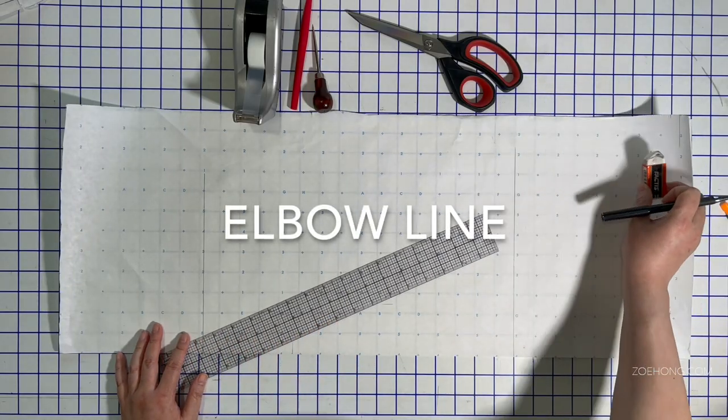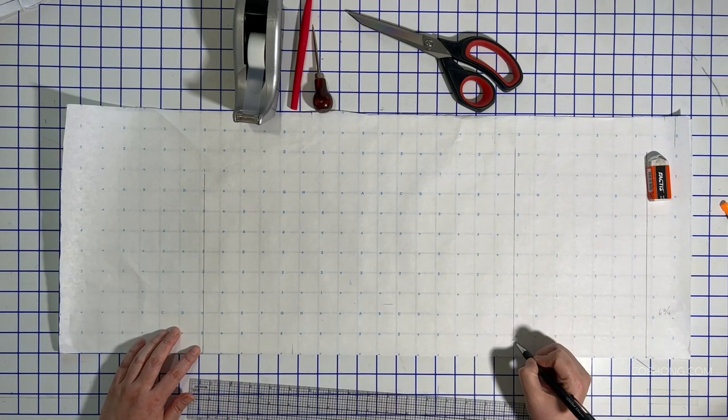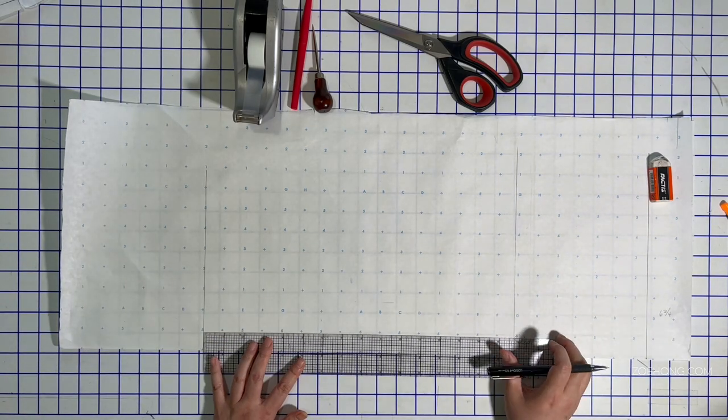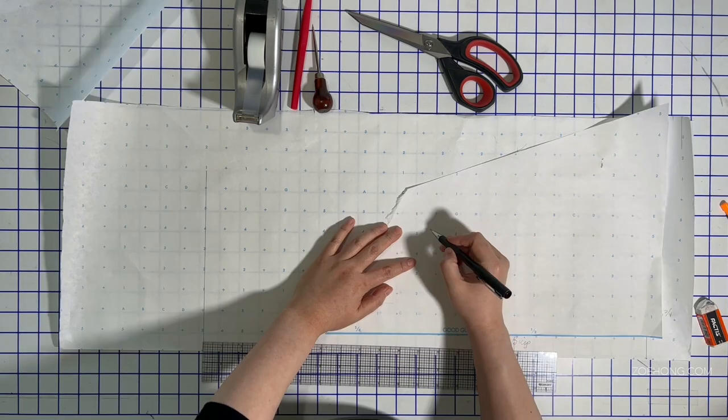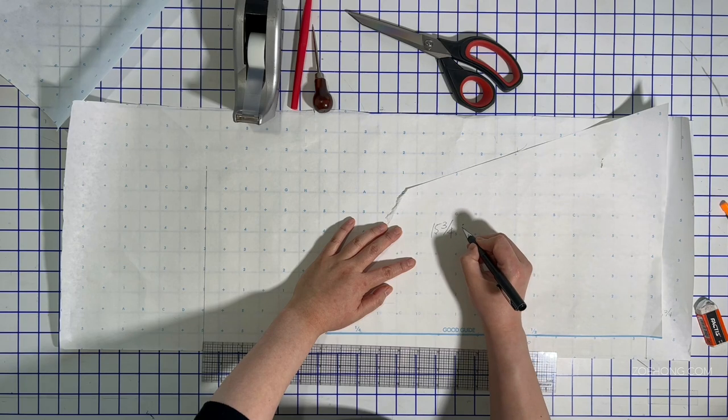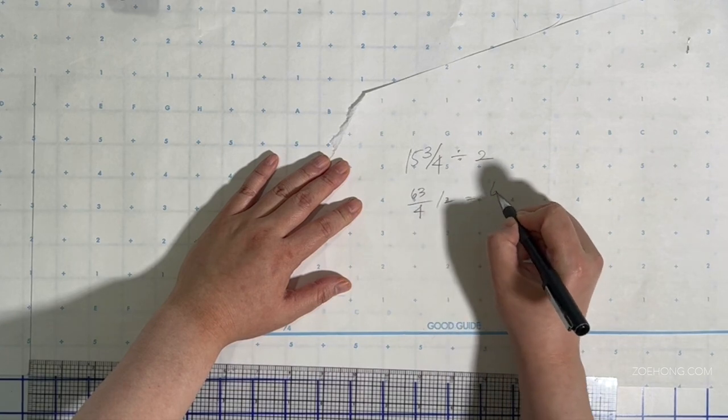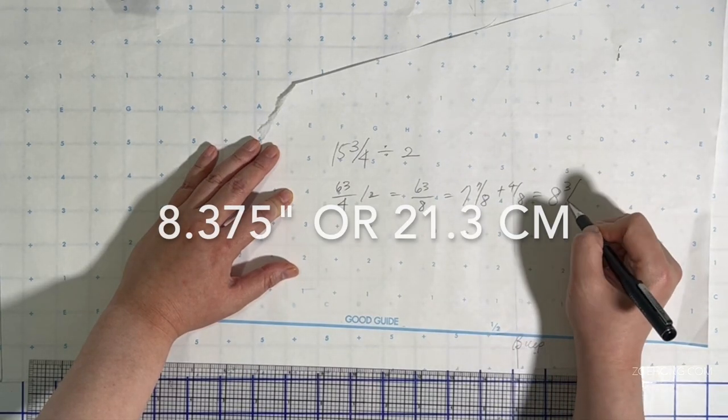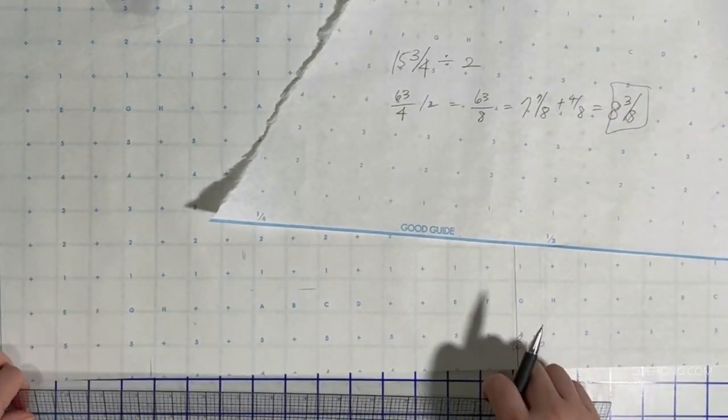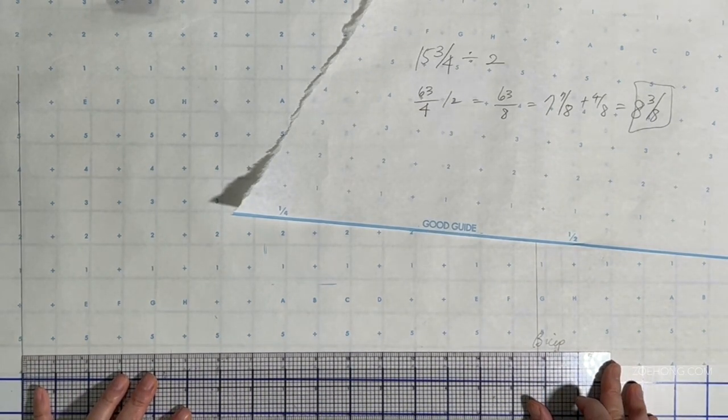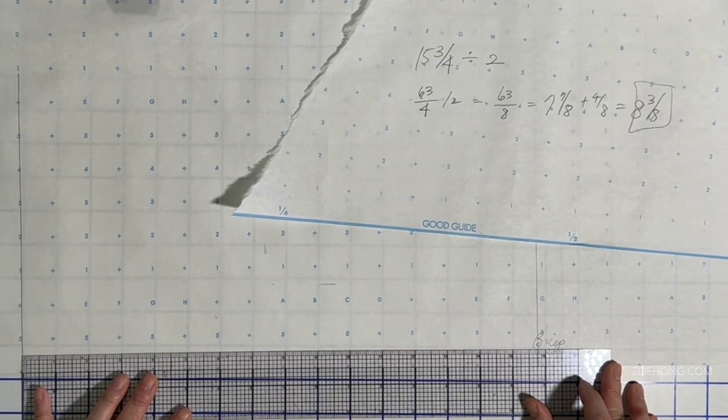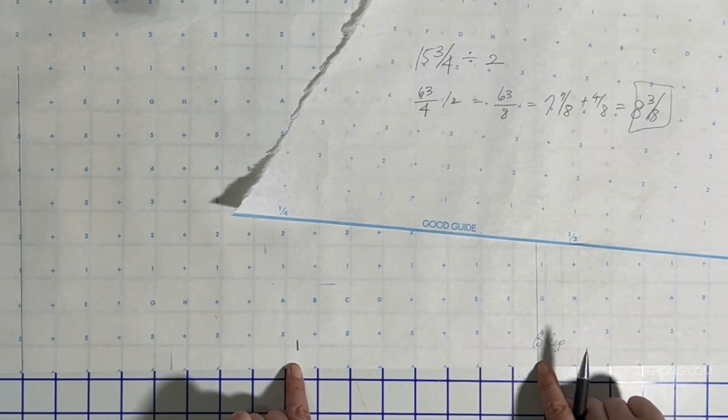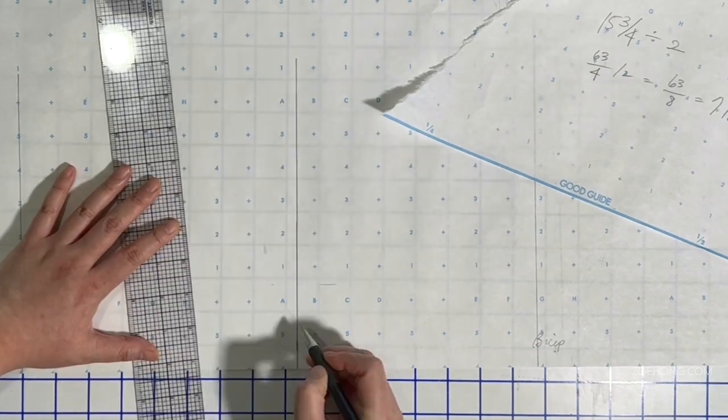So that's your bicep line. Now we're going to draw the elbow line. The elbow line is from the bicep line and you can mark these in case you start getting confused. This is your bicep line. That's your wrist line. And so you want to do half of this distance plus half an inch. So 15 and three quarters divided by two. So that's 63 over four divided by two equals 63 over eight equals eight and three eighths. If you want to do it on a calculator, be my guest. But I have warned y'all that learning fractions is good for pattern making.